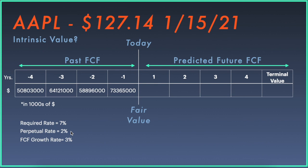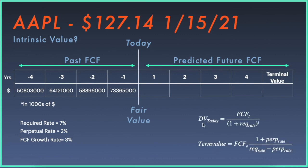The formula for the discounted value today of some future cash flow is: that future cash flow divided by one plus the required rate, raised to the power of that time period. So in year two, we divide the free cash flow by (1 + required rate)^2. The terminal value formula is: the most recent future cash flow times (1 + perpetual rate), divided by the difference of the required rate and the perpetual rate. This gives us the lump sum accounting for all future cash flows beyond year four.